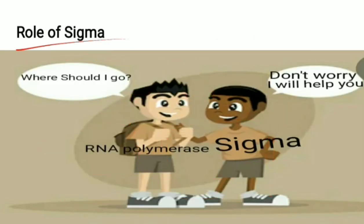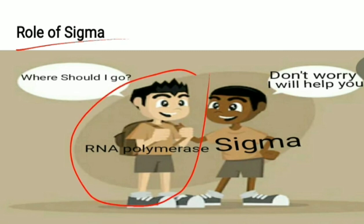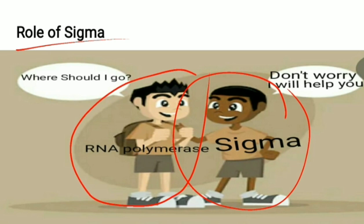Now let us see the role of sigma. The RNA polymerase, as soon as it enters the DNA, sees a coiled structure and is confused about where to go. That is when sigma comes as a savior — it acts as a guide, helping the RNA polymerase find the promoter region.